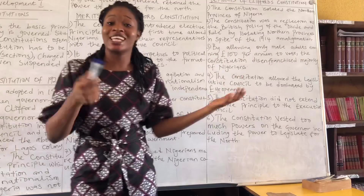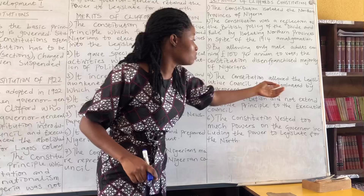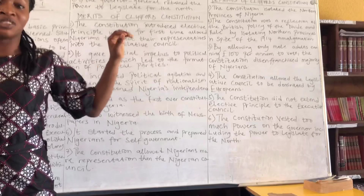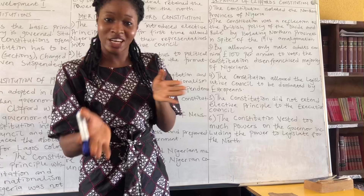Demerit four: the constitution allowed the legislative council to be dominated by Europeans. In the old Nigerian Council there were 46 Europeans and three Nigerians. Under this new constitution, Nigerians were given six seats, yet Europeans retained the majority — so it was still unbalanced and unequal.